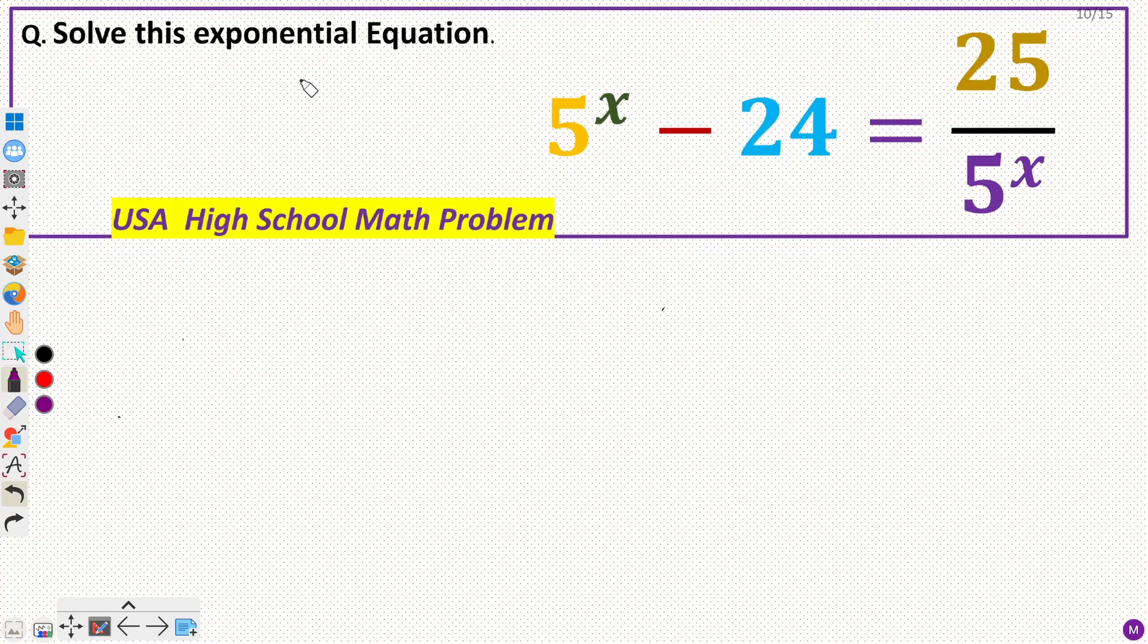Hey everyone, in this video we will solve an exponential equation problem from USA High School Math. The question says find the value of x for this equation: 5 raised power x minus 24 equals 25 divided by 5 raised power x.